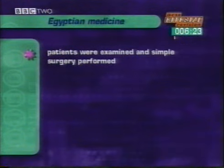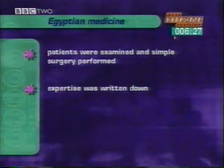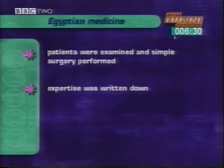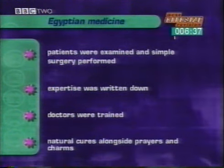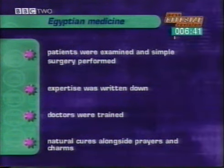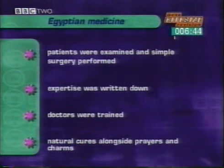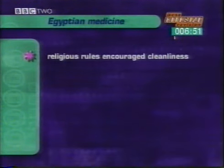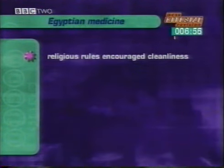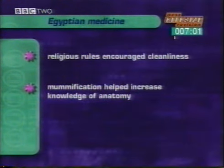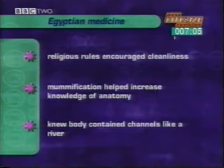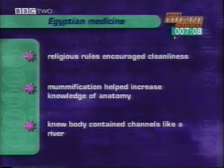Here are the main points to remember. Egyptian doctors examined patients and simple surgery was performed. The advance of writing meant that expertise on symptoms, diseases and recipes for cures was written down and built on over time. Doctors were trained in the art and rules of medicine. Natural cures like the use of willow as an antiseptic were used alongside prayers, spells and charms. Religious rules encouraged cleanliness — Egyptians were required to wash regularly and change their clothes. Mummification involved taking out internal organs, helping increase knowledge of anatomy, although religious rules forbade dissection. They knew the body contained channels like those of a river, and believed blockages caused disease.